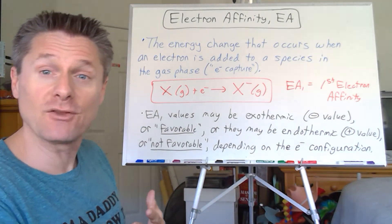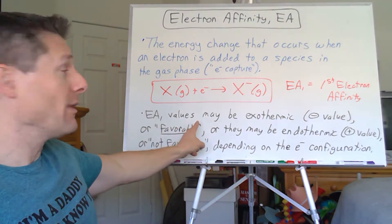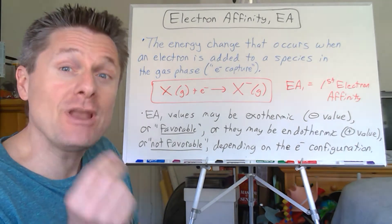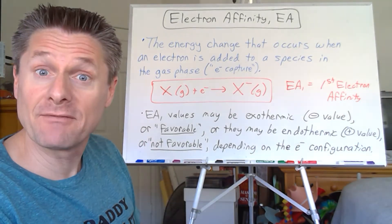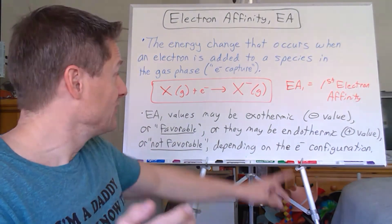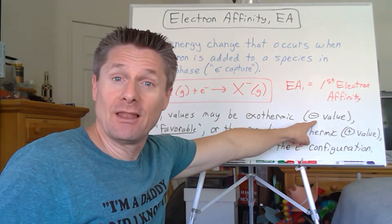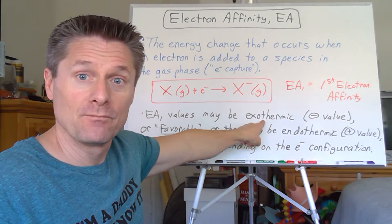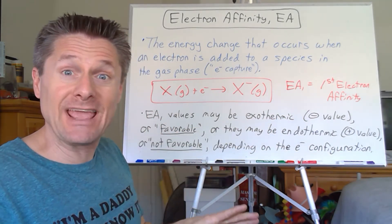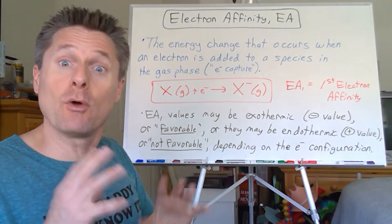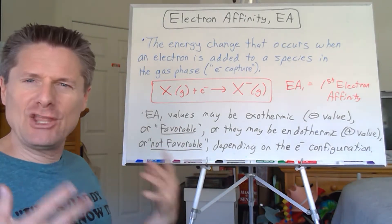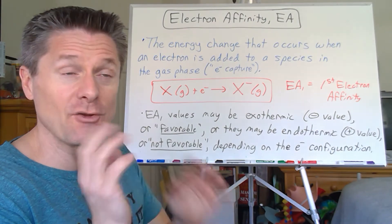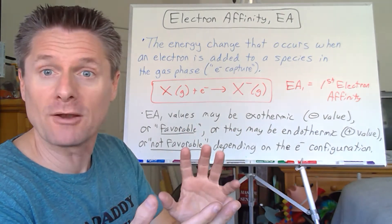So electron affinity values are a little trickier — they could be positive or negative. So if you have a negative electron affinity value, that's exothermic, which means it's releasing energy, and so it became more favorable. So we tend to use the term 'more favorable.' Ionization energy values are all positive — you could say greater or smaller.